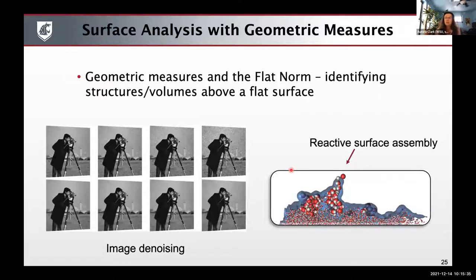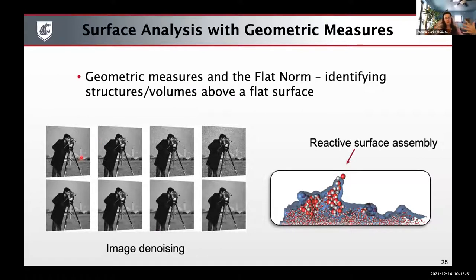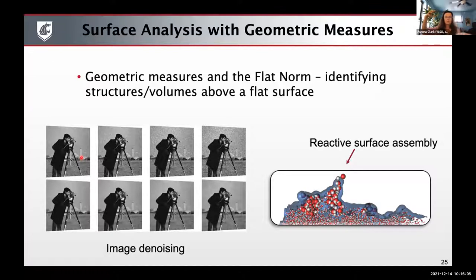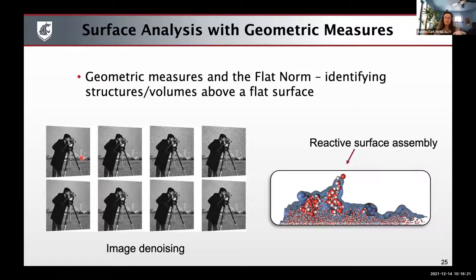The first technique is geometric measure theory, or the flat norm method, which is a technology that comes from image denoising. You can imagine you've got some old photograph with a lot of fuzz on the top — you imagine that fuzz as surface structure on top of a perfectly flat, perfect image, and you want to remove this excess information from our base image. This is similar to thinking we have an idealized flat liquid-liquid interface, and on top of it we have these organized surface structures that we want to pull off and analyze.